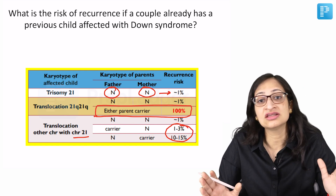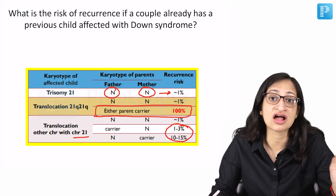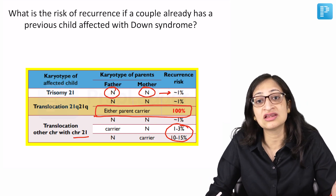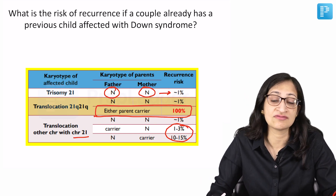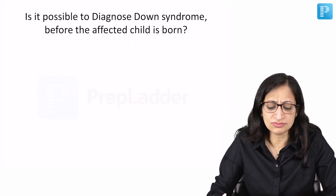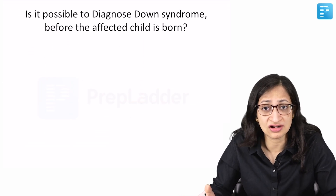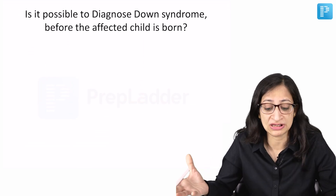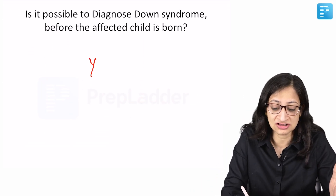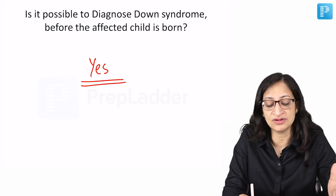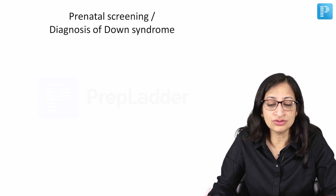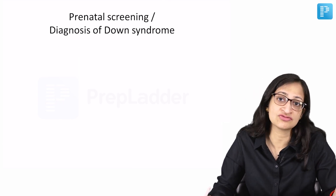If a child is identified having Down syndrome with a translocation, and the parent's karyotype is also abnormal, then there is definitely an increased risk of having a child with Down syndrome in the next pregnancy. It is possible to diagnose this condition — which has lifelong implications — before the affected child is born, and prenatal screening or diagnosis should be offered to each and every couple.